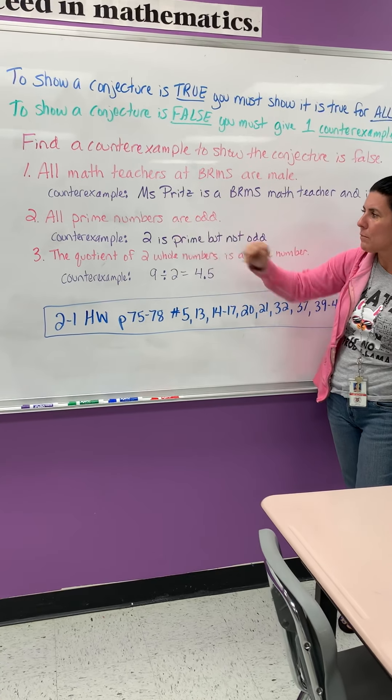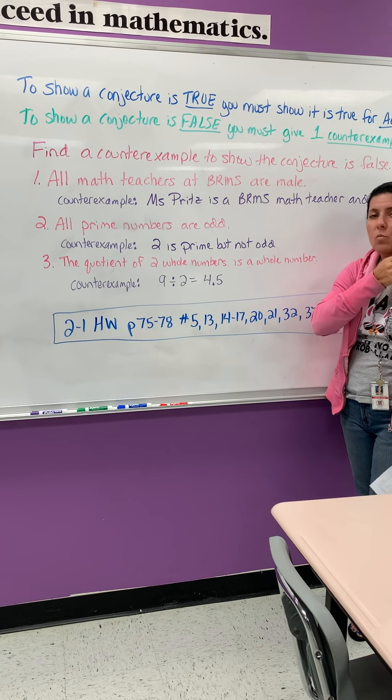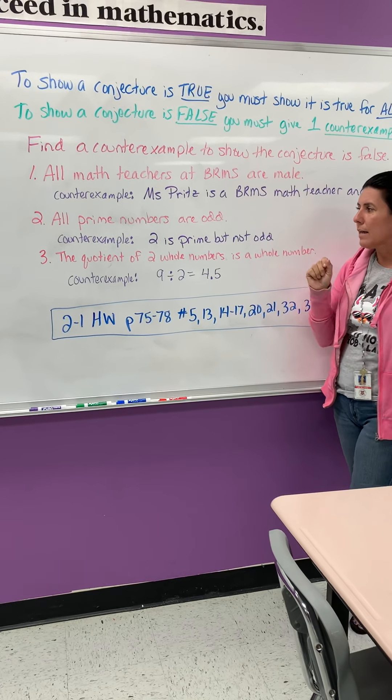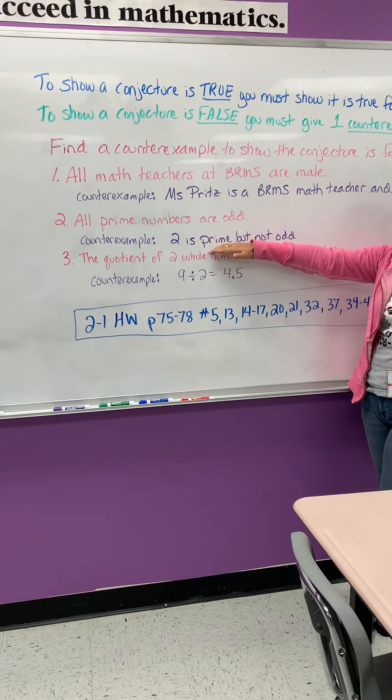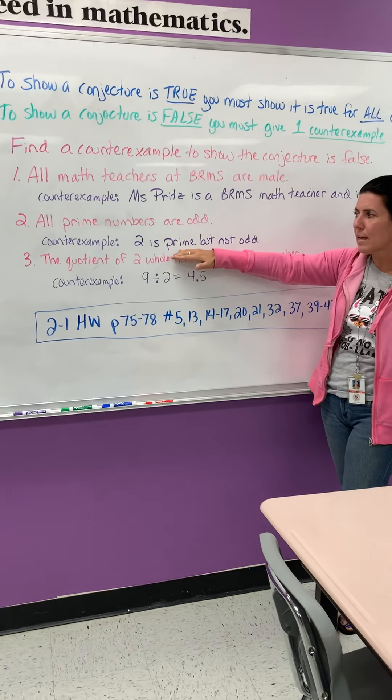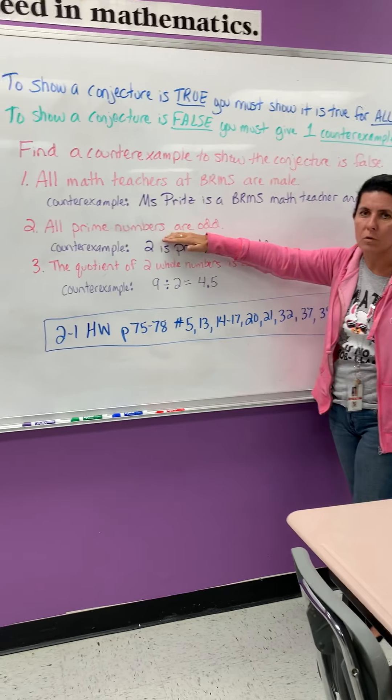Next example, all prime numbers are odd. All we need is one number that is prime but not odd. Two is prime, but it is not odd. So this statement tells us that this statement is wrong, is false.